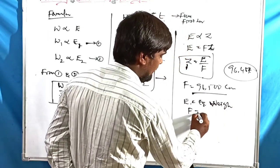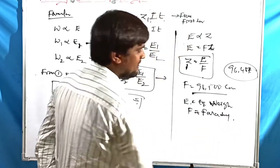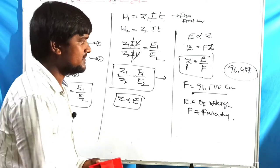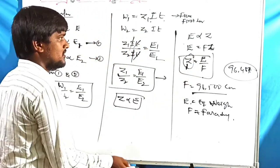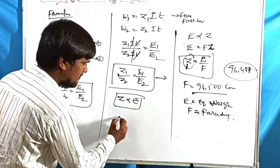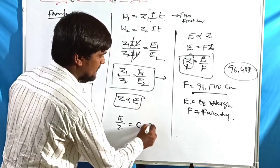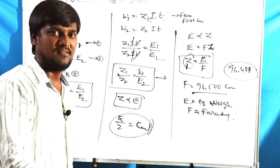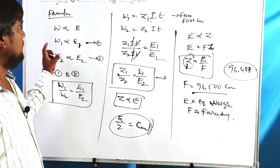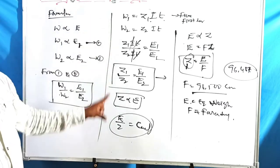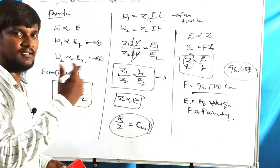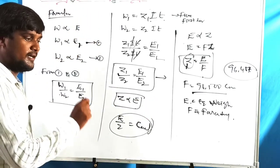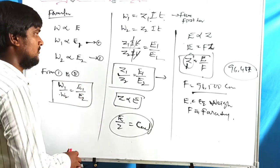The key formulas for Faraday's Second Law are: Z = E / F, where E is equivalent weight and F is Faraday's constant. Also, E / Z is always a constant value equal to F. These are the formulas used in solving numerical problems related to Faraday's Second Law.